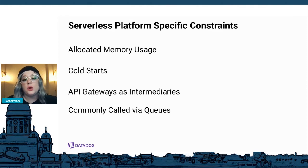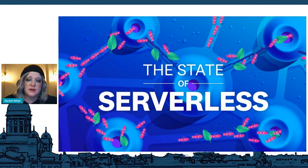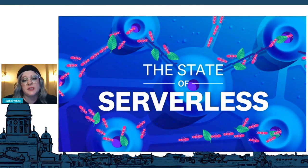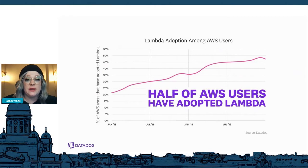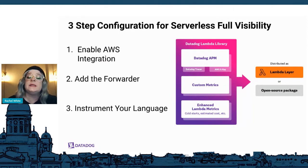There's an API gateway or a queue that calls your serverless application. Every year Datadog produces a state of serverless or state of containers report where we dive into usage data from our customers. We found that half of AWS users have adopted Lambda, which tells us there's no doubt there are real cases and business value for using serverless. So how are we going to see that our serverless functions are working as intended?